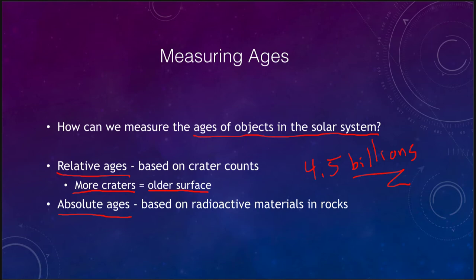The moon was last resurfaced a long time ago, whereas the Earth has been relatively recently reworked. We can use this throughout the solar system because the cratering rate has been effectively the same. The absolute ages are based on radioactive materials and radioactive decay. Radioactive material decays in a very predictable manner, and we can use that to figure out the exact age of a rock sample and how long it has been since that rock solidified from molten lava.